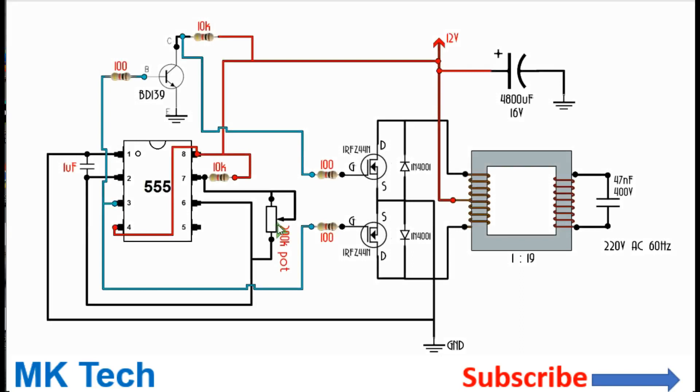Welcome to MK Tech. I'll show you how you can make a 12 to 220 volts inverter with an output frequency of 50 or 60 hertz based on the IRF Z44 MOSFET and the 555 timer driver IC.